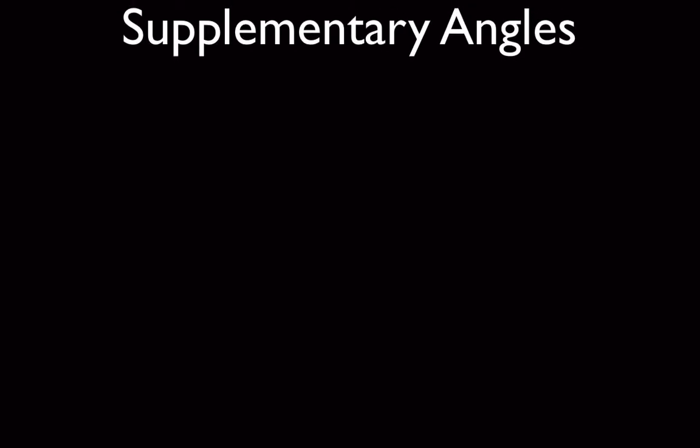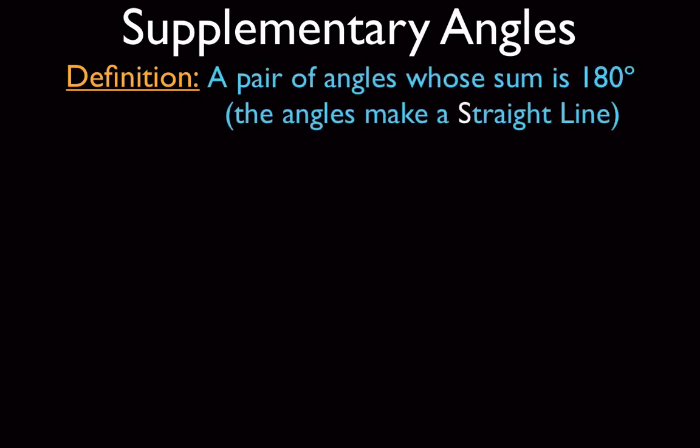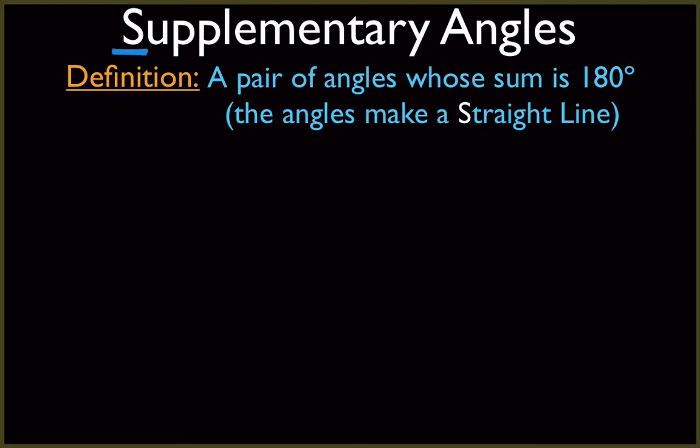We're going to start with supplementary angles. The definition is a pair of angles whose sum is 180 degrees, meaning the angles make a straight line. I like to emphasize the S and the S: supplementary is for straight line. Whatever you want to do to help you remember that a straight line is supplementary equals 180 degrees. Memorizing them gets tough because complementary and supplementary just get jumbled in your head, so you want some way to keep them memorized.